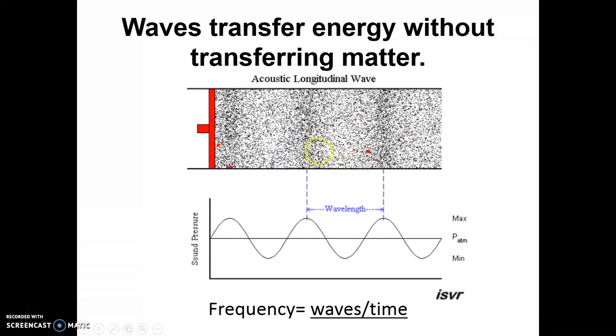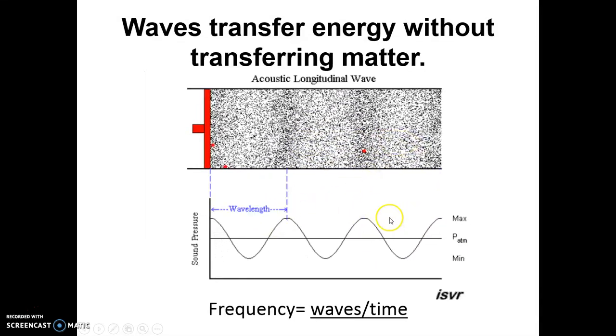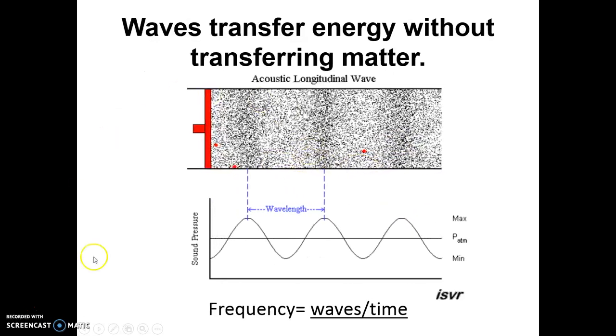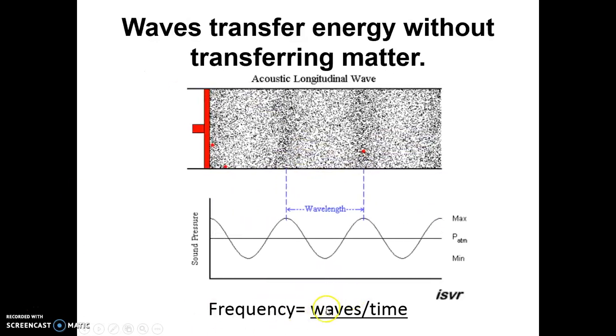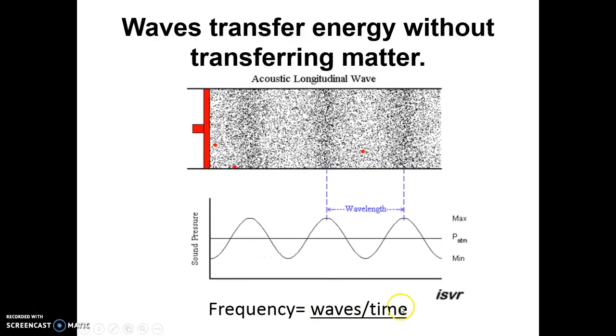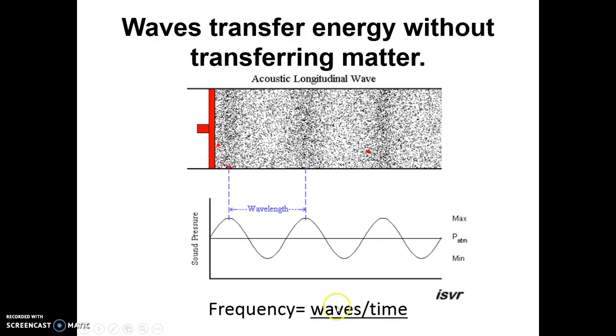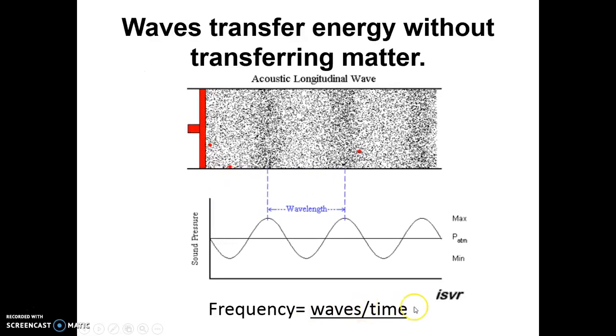So it's still our wavelength is, again, from compression to compression, crest to crest, trough to trough. And here, to calculate frequency, again, that's just waves per time period. So again, hertz is my standard unit, and that's the number of waves per second.